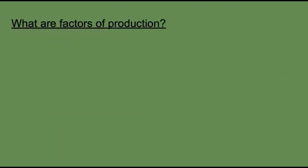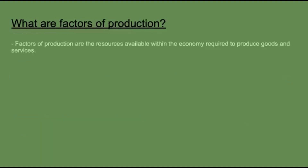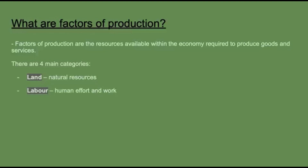So what are the factors of production? Factors of production are the resources available within the economy required to produce goods and services. There are four main categories. You've got land, which includes natural resources such as trees, water, and minerals. You've got labour, which is human effort and work. And you've got capital, which is man-made items used to make goods and services.